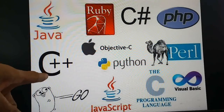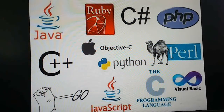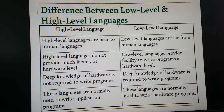Through these high-level languages we can write programs so that computers can understand us — that is called a high-level language. But low-level languages are far from human languages, meaning they are machine-dependent. Low-level languages provide facilities to write programs at the hardware level, deep knowledge of hardware is required, and these languages are normally used to write hardware programs.